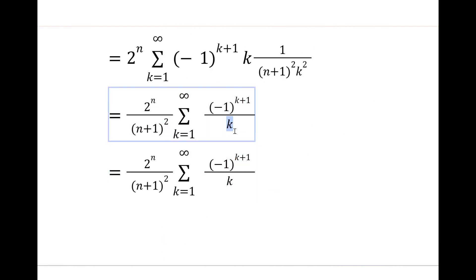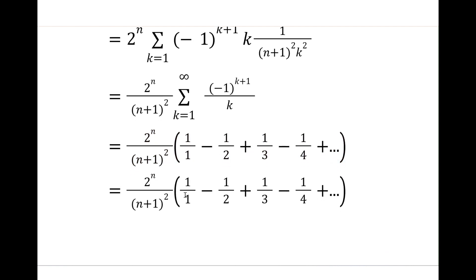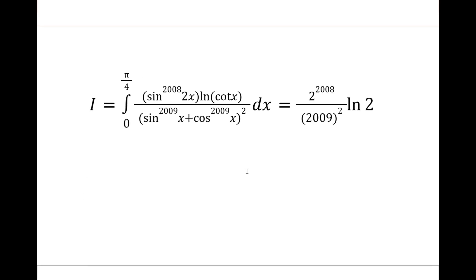And now we just have this interesting sum to evaluate. I'll write out all the terms. This is actually just one on one minus one on two plus one on three minus one on four, etc. And amazingly this converges to ln2. This sum is just the alternating harmonic series which evaluates to ln2. And there you go. We have our answer: 2 to the 2008 over 2009 squared ln2.